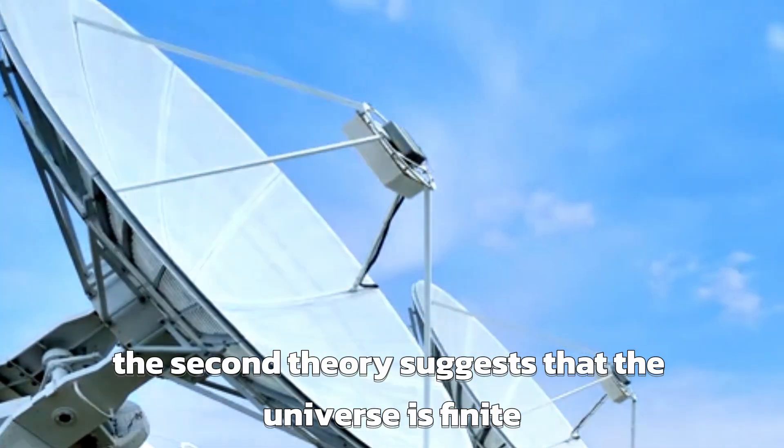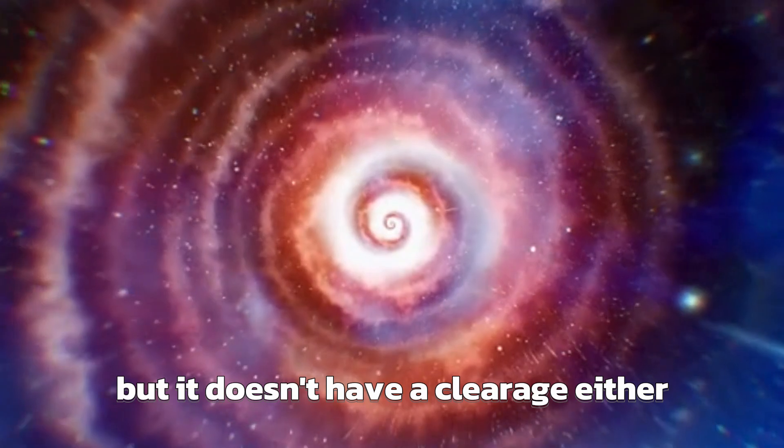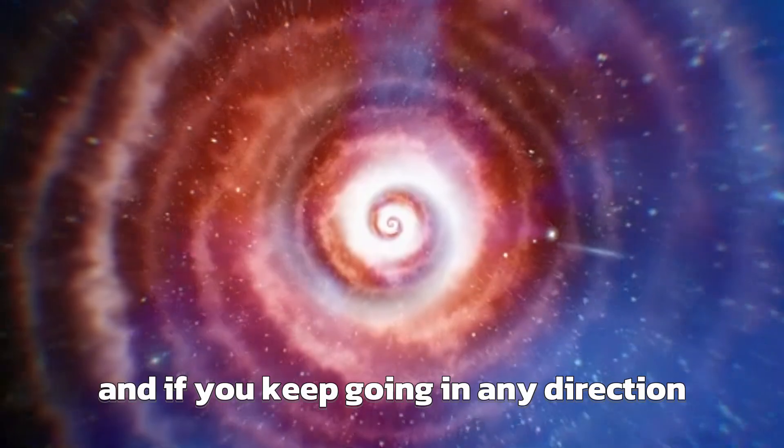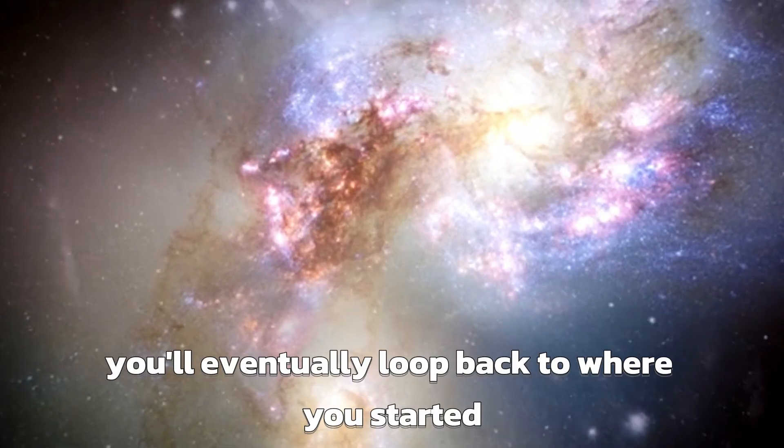The second theory suggests that the universe is finite, but it doesn't have a clear edge either. This means it's similar to a giant ball, and if you keep going in any direction, you'll eventually loop back to where you started.